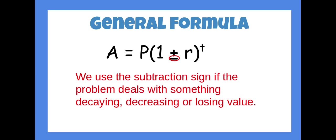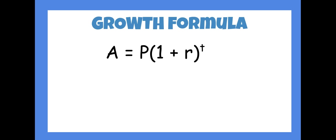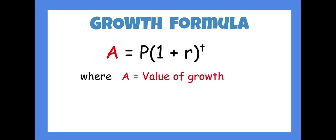In the growth formula, the A stands for the growth value - I sometimes think of it as the answer or the total. The P is your starting amount; it usually symbolizes principle, or you could think of price or population. It's usually the starting amount or the number in the problem.